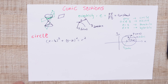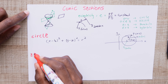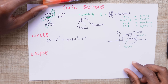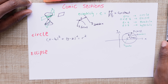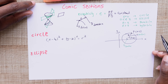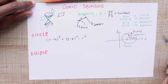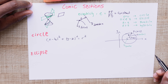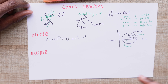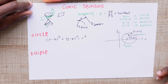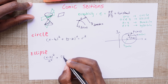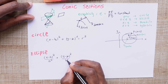The second conic section is the ellipse. An ellipse, which has an eccentricity between 0 and 1, is defined as the locus of a set of points which move in such a way that the sum of the distances from the two foci is a constant. Its Cartesian equation is (x minus h) squared over a squared plus (y minus k) squared over b squared equals 1.